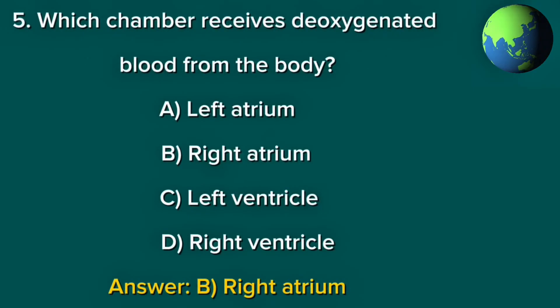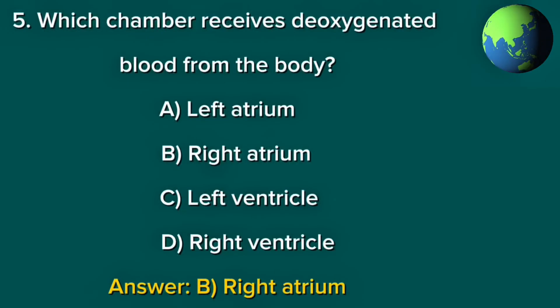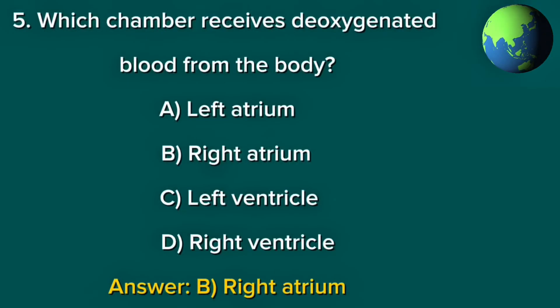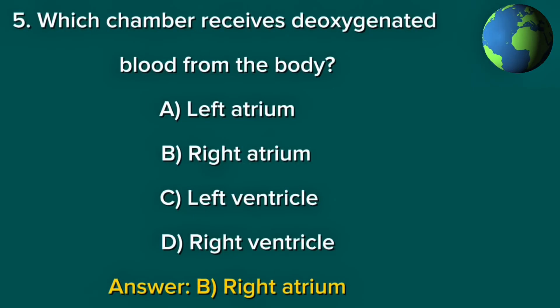Question 5. Which chamber receives deoxygenated blood from the body? A. Left atrium. B. Right atrium. C. Left ventricle. D. Right ventricle. Answer: B. Right atrium.